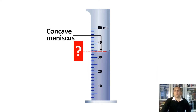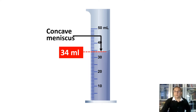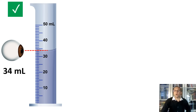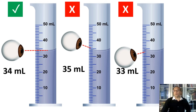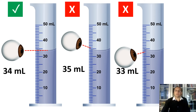So what is the volume of water in this graduated cylinder? 34 milliliters, correct. It is important to read the graduated cylinder from eye level — at eye level you will read the accurate volume, in this case 34 milliliters. If you are too high, you will read a bigger volume, in this case 35 milliliters. If you are too low, you will read a smaller volume, in this case 33 milliliters. This is very important to remember when making measurements of water or different types of solutions.